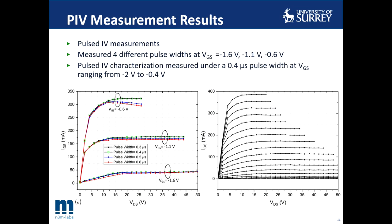The post-IV measurement results for three different gate voltages of minus 1.6, minus 1.1, and minus 0.6 volts, and four different pulse widths are shown on the left-hand side figure. There is very little change in drain current for pulse widths of 0.4 and 0.3 microseconds, which suggests that the post-IV measurements are performed in an isothermal environment. Therefore, a full sweep of the IV characteristics of the transistor was obtained with a 0.4 microsecond pulse duration, and the results are shown in the figure.